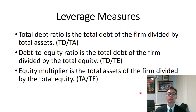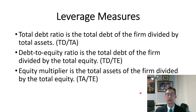The total debt ratio is total debt over total assets. Be careful here because students oftentimes want to just do long-term debt divided by total assets. But this measure does include the current liabilities. To make sure, you might take total assets minus total equity divided by total assets — that way you'll be sure to get those current liabilities also.